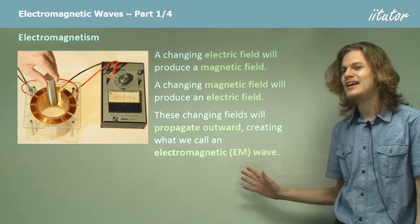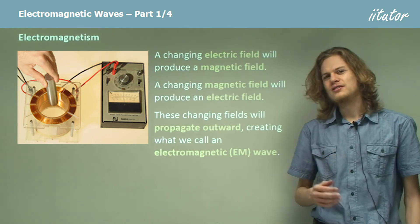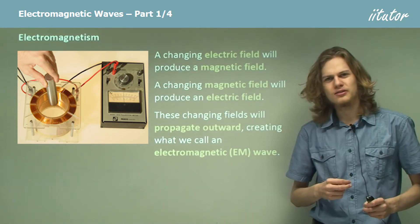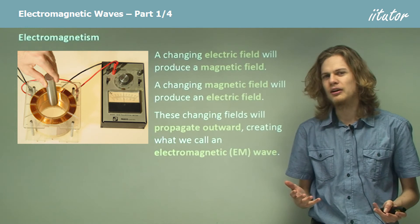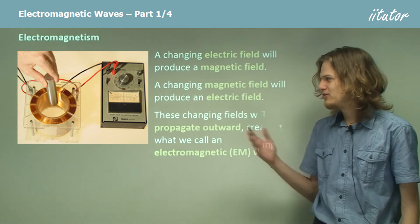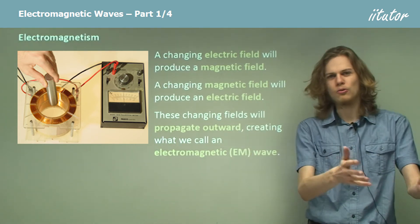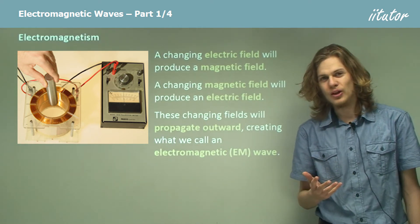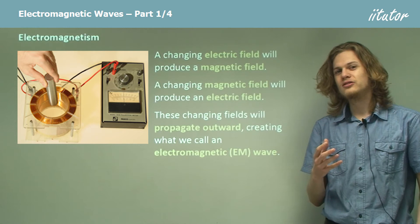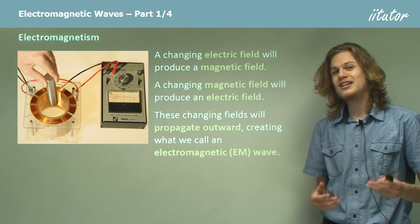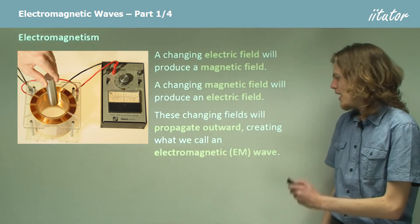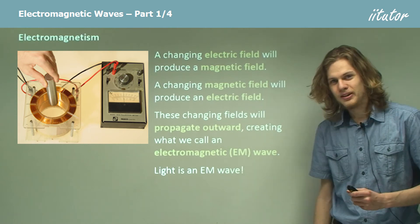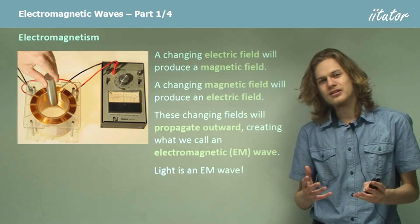So surely if these electromagnetic waves exist, we'd be able to see them in nature, right? We'd be able to make an instrument that could detect those waves. Well, it turns out that we don't really need to do that because there's already a type of electromagnetic wave that we can see with our own eyes, and that is light.